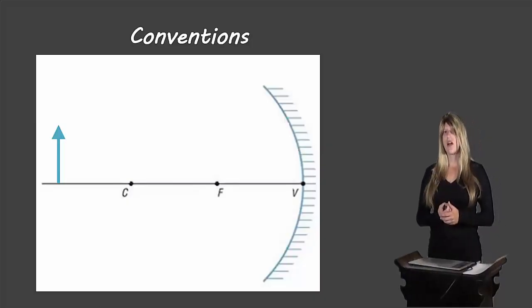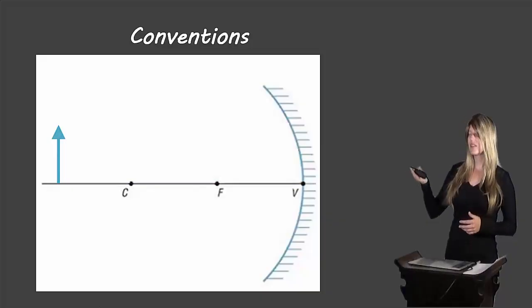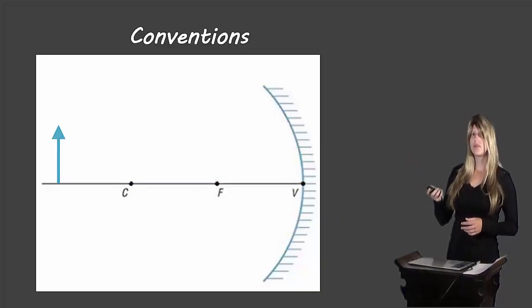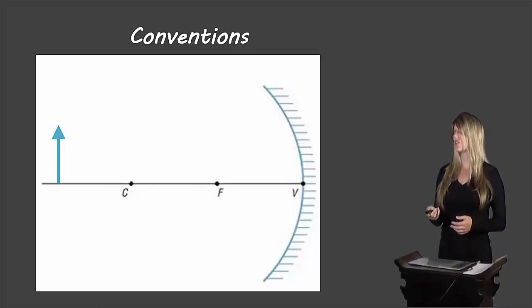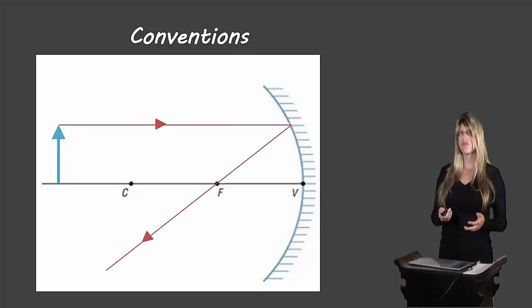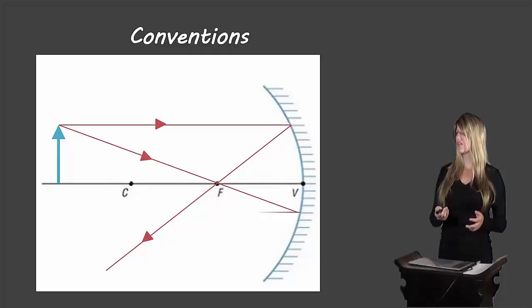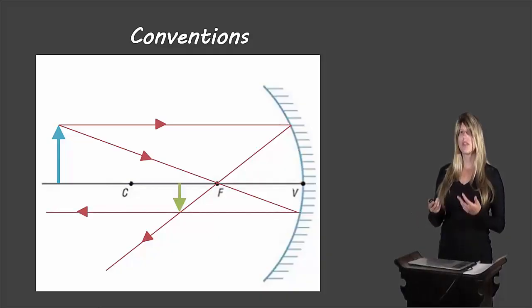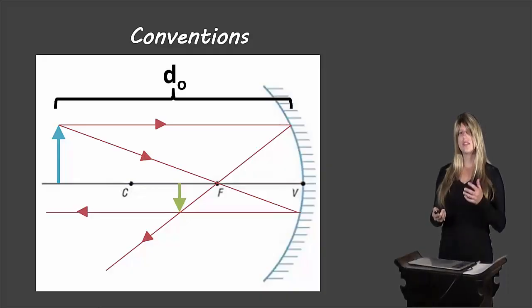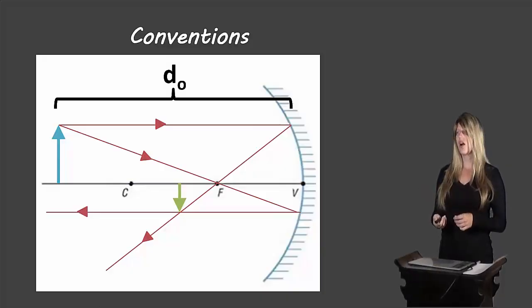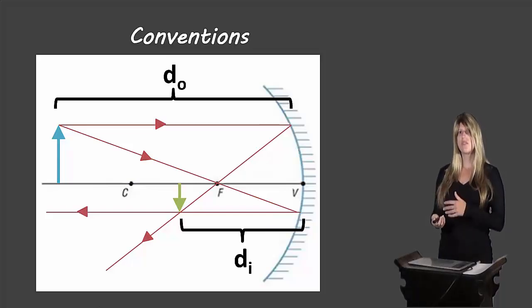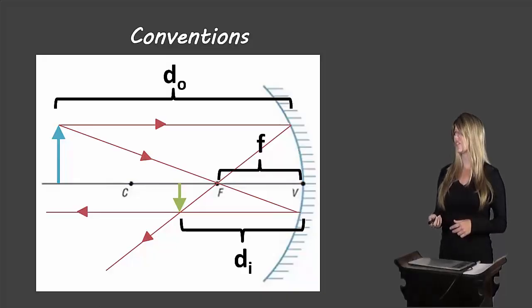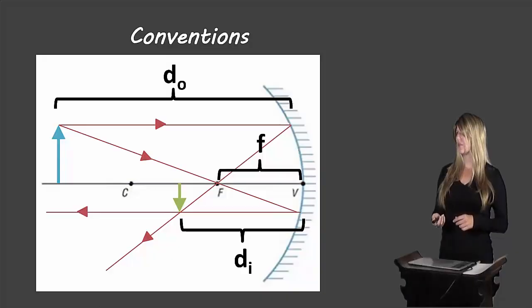Let's take a look at the conventions to start off. Here we have an object in front of a concave mirror. Using our ray diagram rules: a light ray parallel to the principal axis reflects through the focus, and a light ray that goes through the focus reflects parallel to the principal axis — where they cross is where the top of our image will be. The distance between the object and the vertex of the mirror is called DO (D for distance, O for object). The distance between the image and the vertex is DI, and the distance between the vertex and the focus is F for focal length.